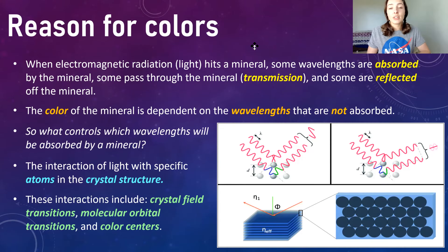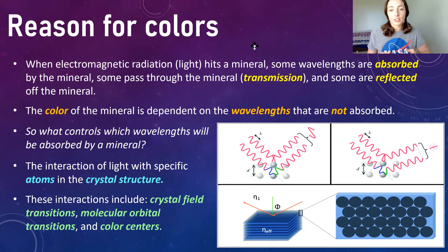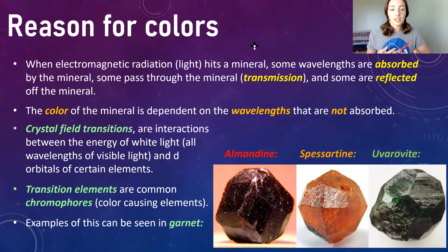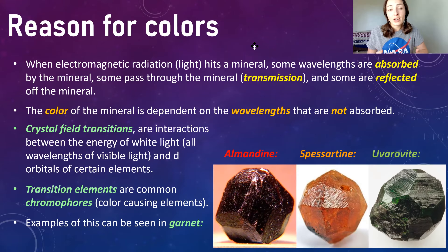This comes down to the interaction of light with specific atoms in the crystal structure of the mineral. There are three main types of interactions between light and crystal structure: crystal field transitions, molecular orbital transitions, and color centers. The first, crystal field transitions, involves interactions between the energy of white light — all wavelengths of visible light at once — with the d orbitals of certain elements. Transition elements are commonly the color-causing or chromophore elements.